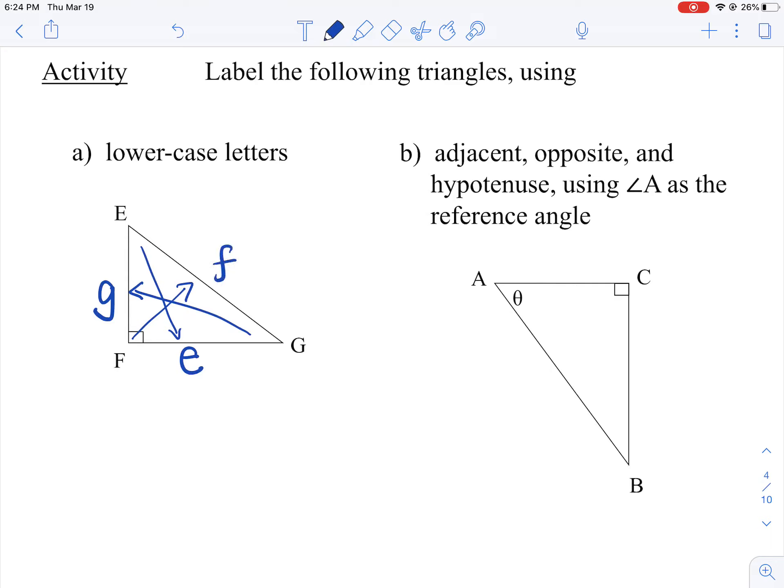Now, another way we can label a triangle is using adjacent, opposite, and hypotenuse. In part B, our reference angle there is angle A. That is the point at which we're going to stand at to help us with the labeling.